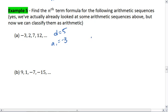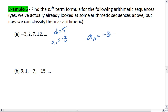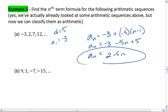Plugging it or solving with the explicit formula, we see a sub n is going to be negative 3 plus negative 5 times n minus 1. I can distribute. This gives me negative 5n plus 5 and simplify. So I get a sub n equals 2 minus 5n. And that's my final answer.